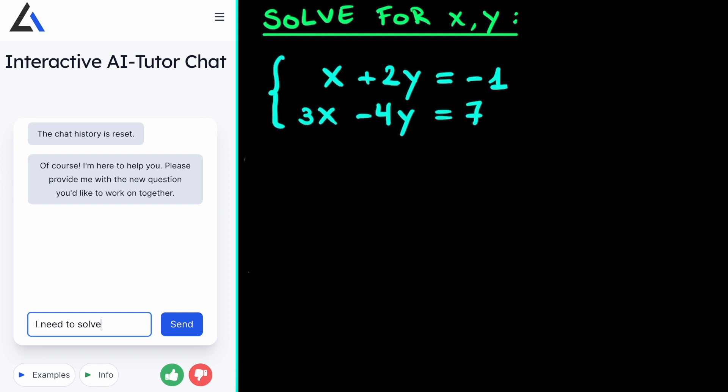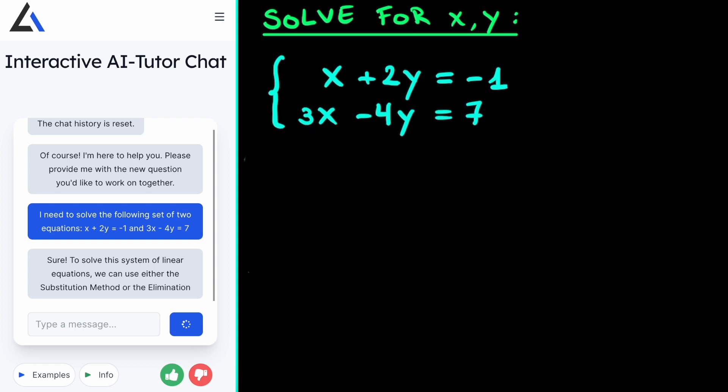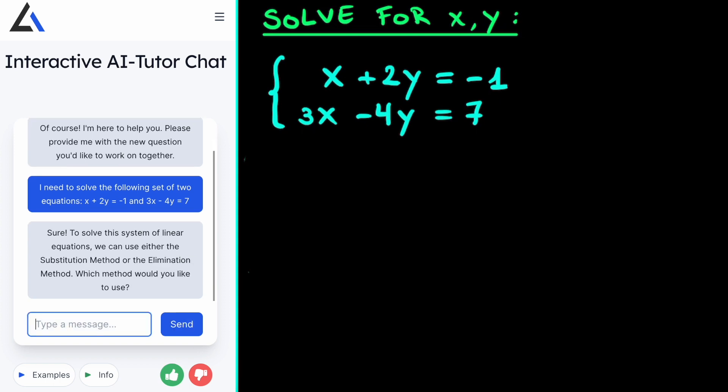Let's say that you are given this set of two equations and you don't quite know how to start. To get a hint on how to start solving this problem, you just give it to the AI Tutor. For instance, you write, I need to solve this set of equations, x plus 2y is equal to minus 1 and 3x minus 4y is equal to 7. The AI Tutor recognizes that there are basically two methods of solving such a set of equations, either the substitution method or the elimination method, and it asks us which one we would like to use.